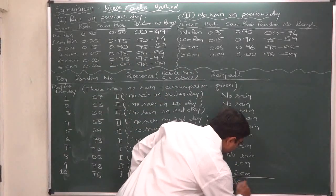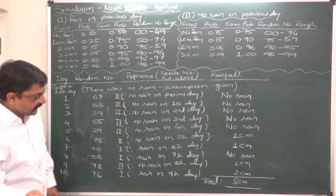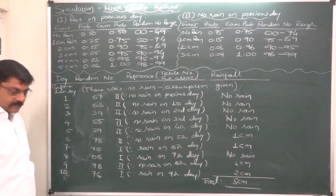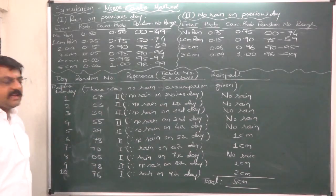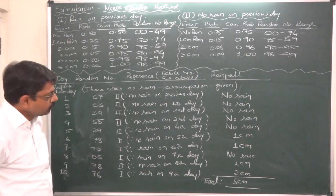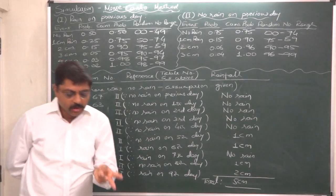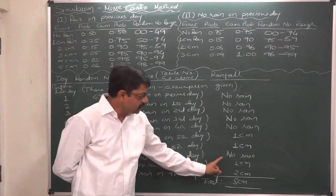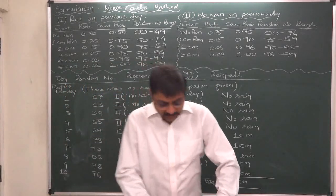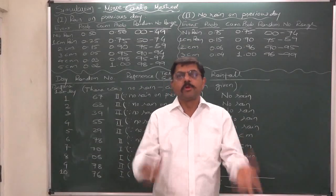Summarizing the results: total rainfall is 1 + 1 + 1 + 2 = 5 centimeters over 10 days. Total number of days without rain is 6. So the two conclusions from the simulation are: total days without rain = 6, and total rainfall = 5 centimeters. I hope this case helps you understand the concept and steps of solving a simulation problem.